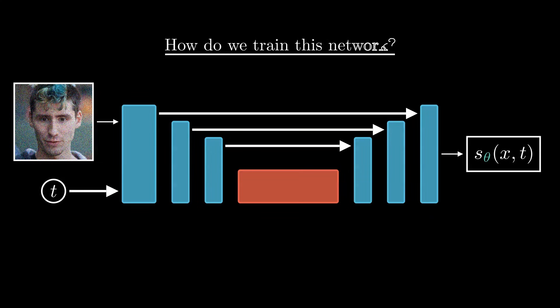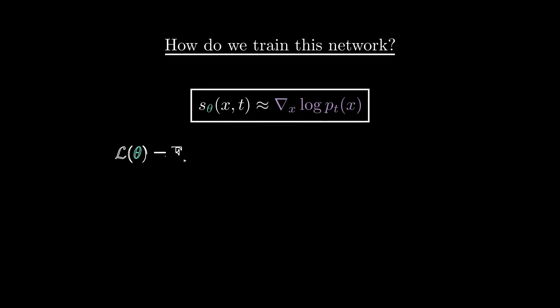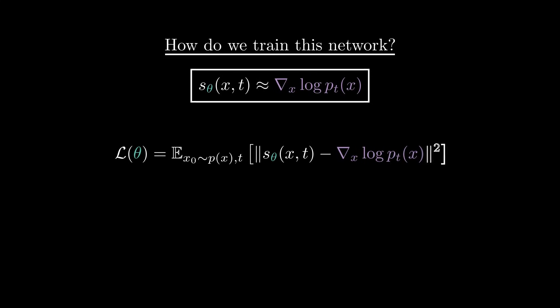OK, but now how do we train this network? What we want is for the network to approximate the score function at every time t. Formally, we define a loss that measures how far our network's output is from this true score, and we take the expectation over random time steps t and data samples x_0. So to predict the score, we need to know the score in the first place. Of course, in most cases we don't know this score, otherwise we wouldn't be trying to learn it in the first place.